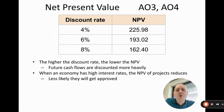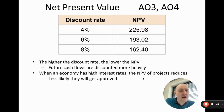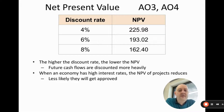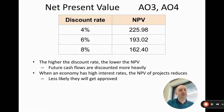When an economy has high interest rates, the NPV of projects will go down, because cash flows are discounted more heavily and projects are less likely to be approved. This is one reason why when interest rates go up in an economy it can slow the economy down — governments often raise interest rates to fight inflation, so interest rates are very important for assessing whether projects actually get done.